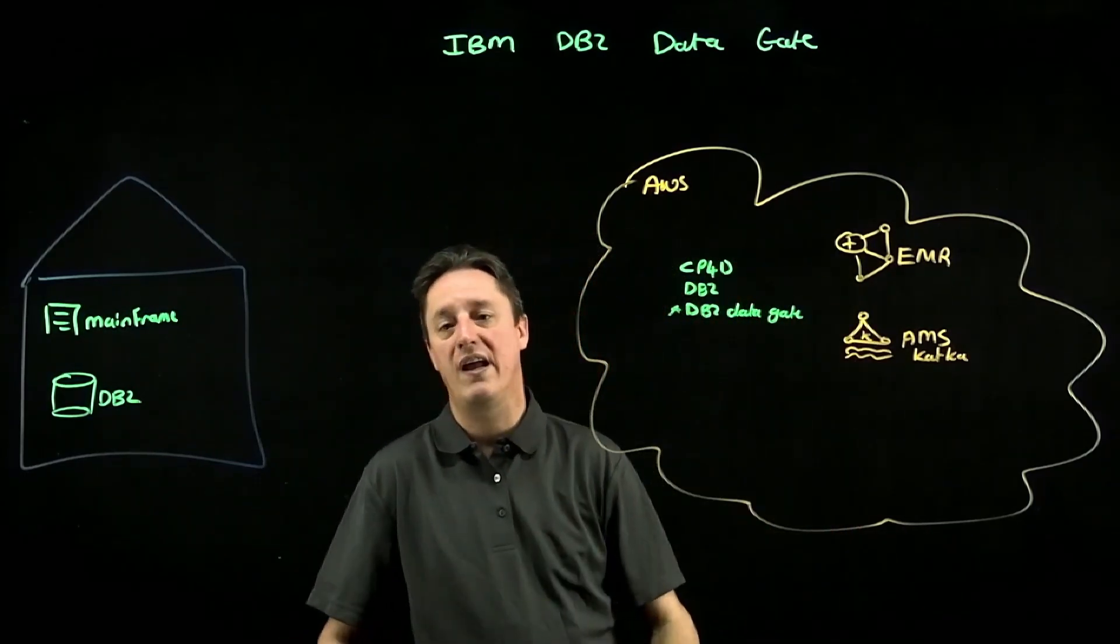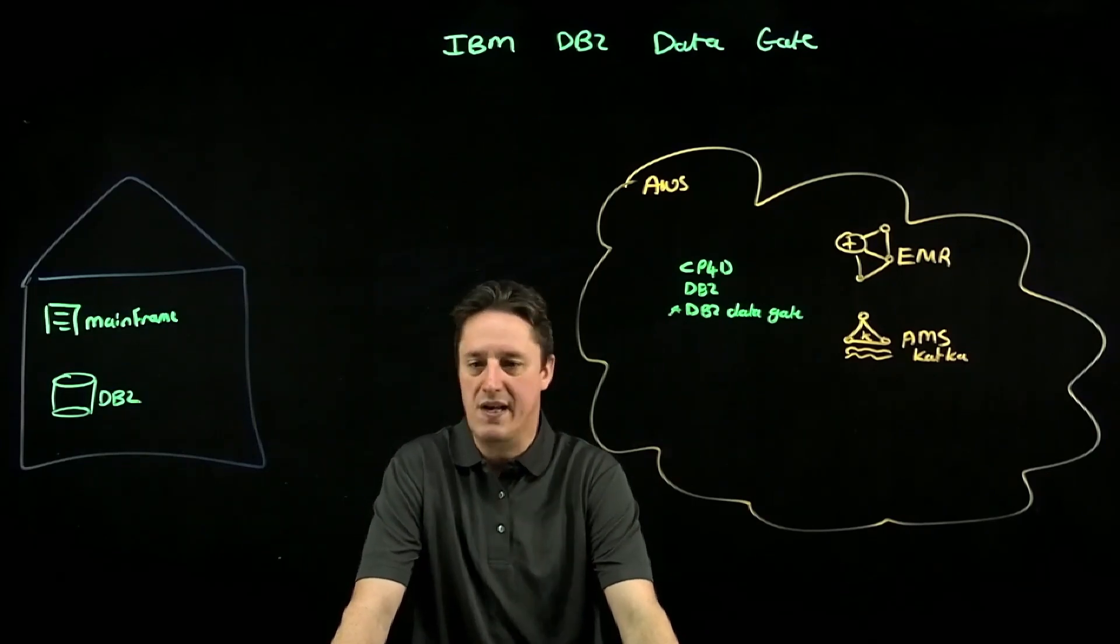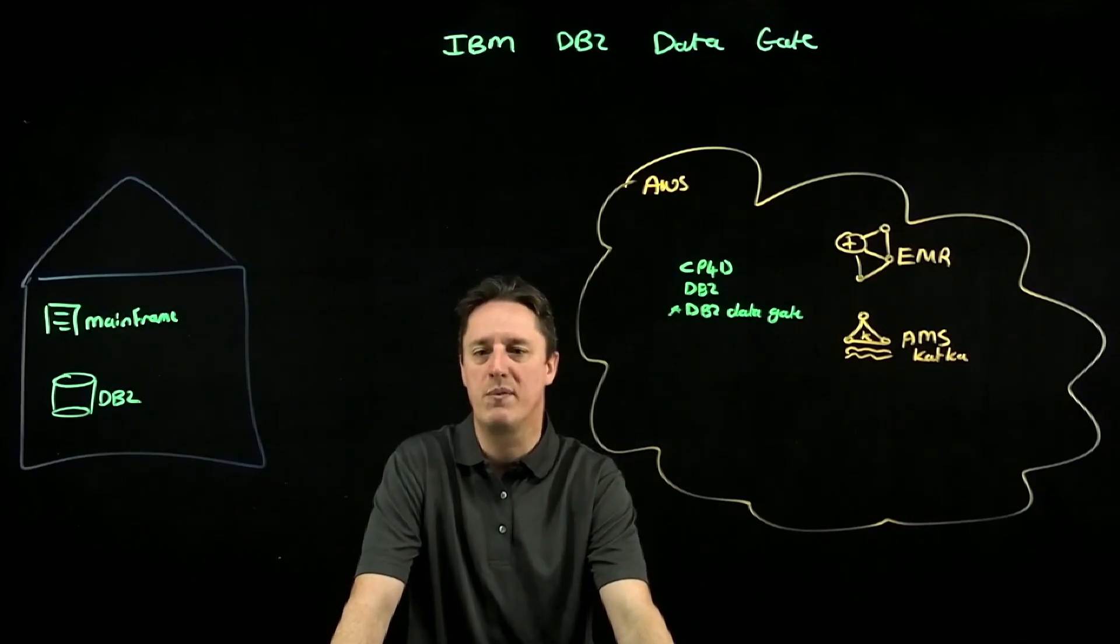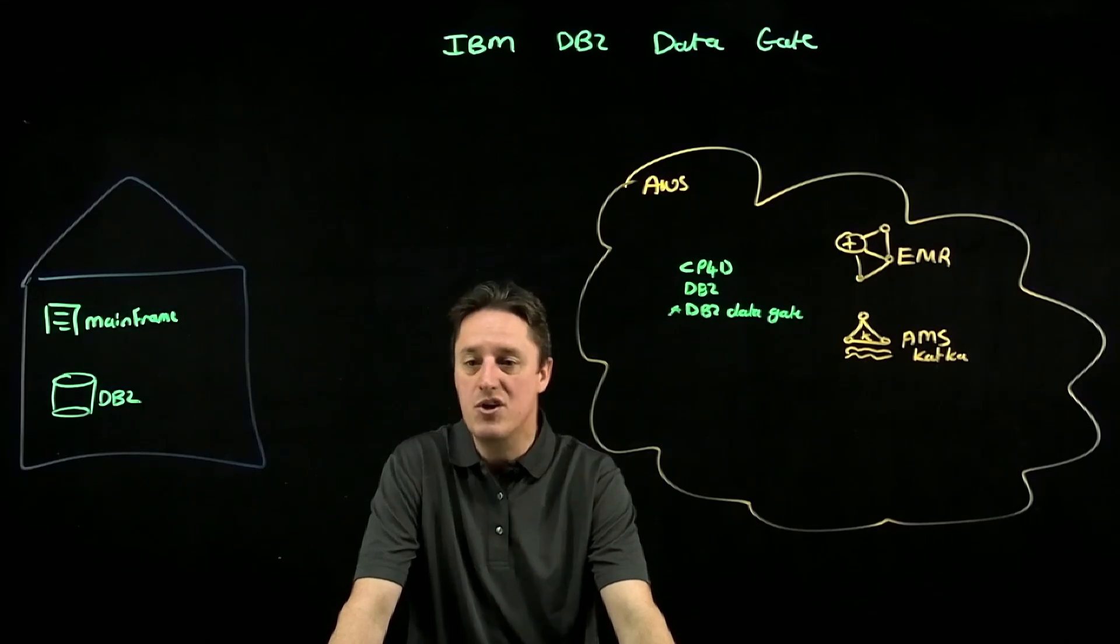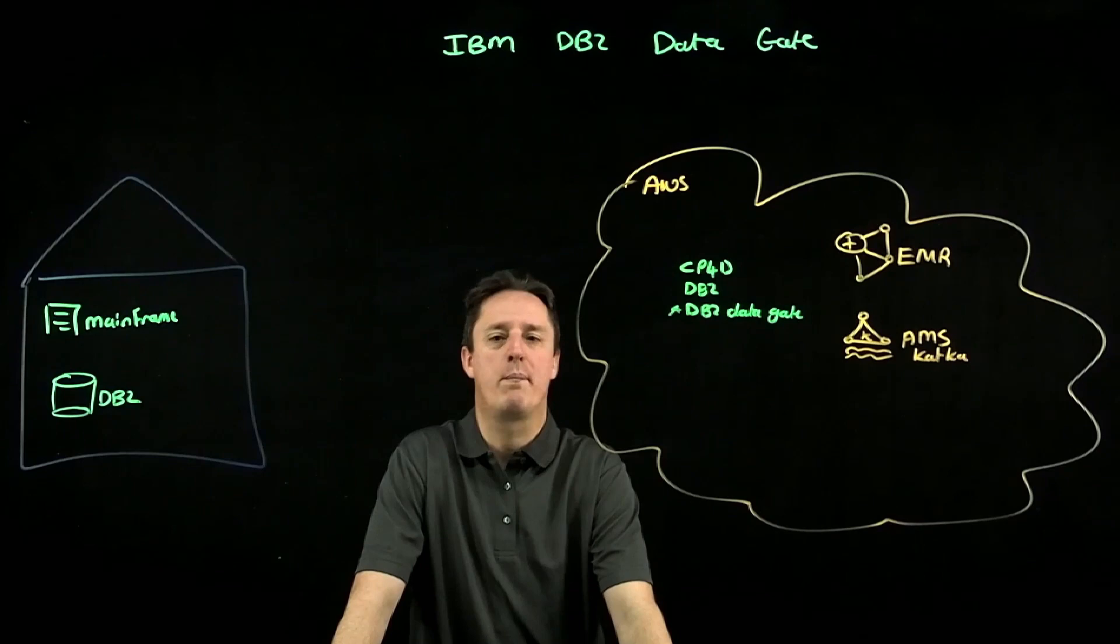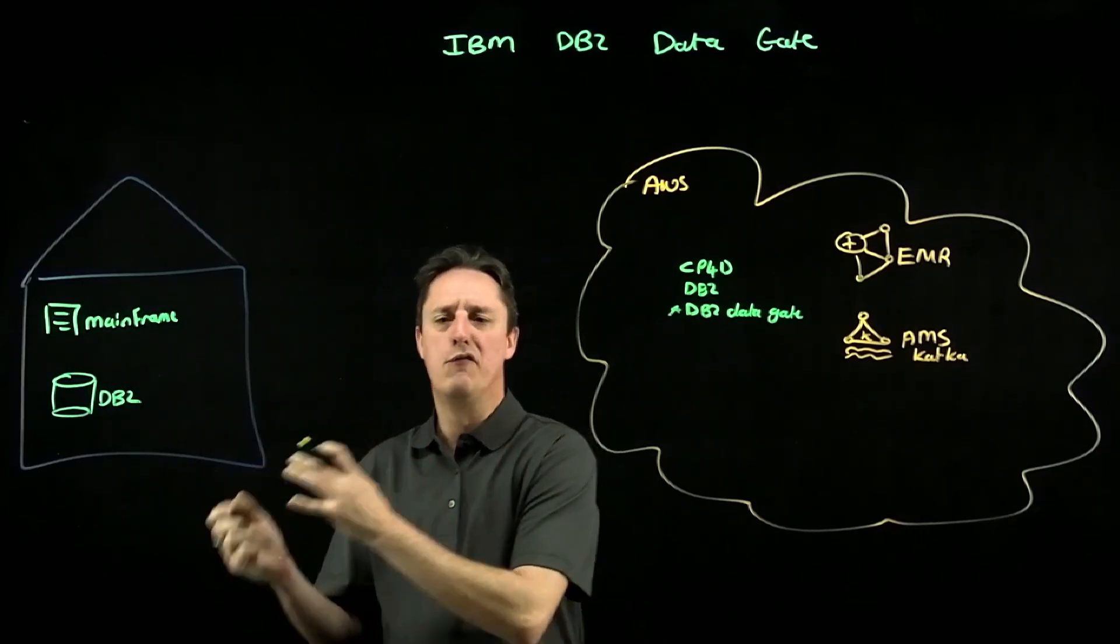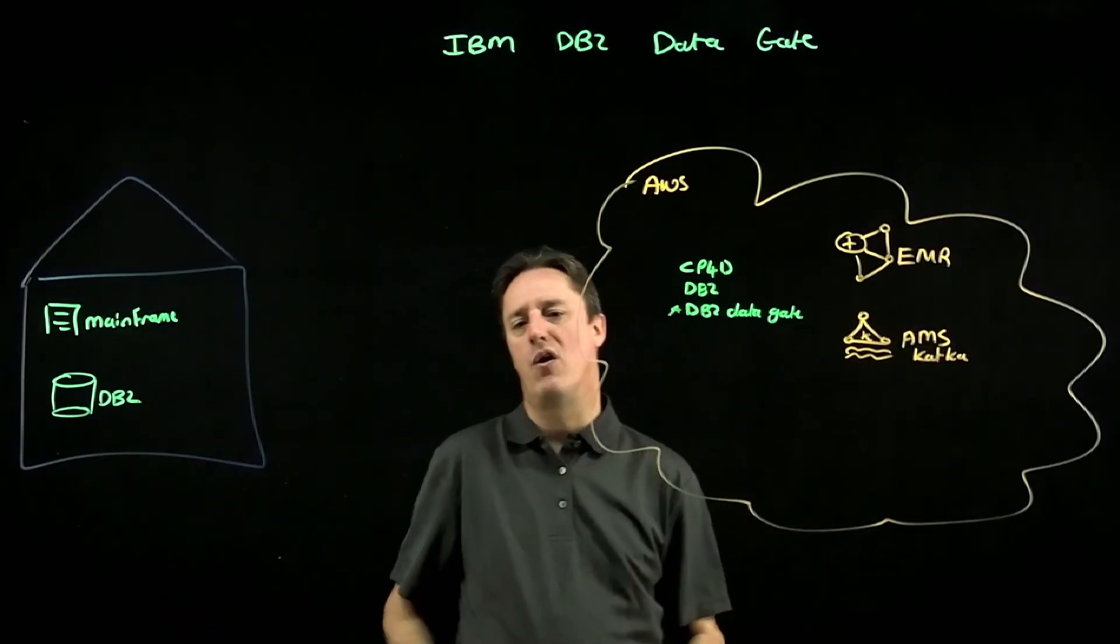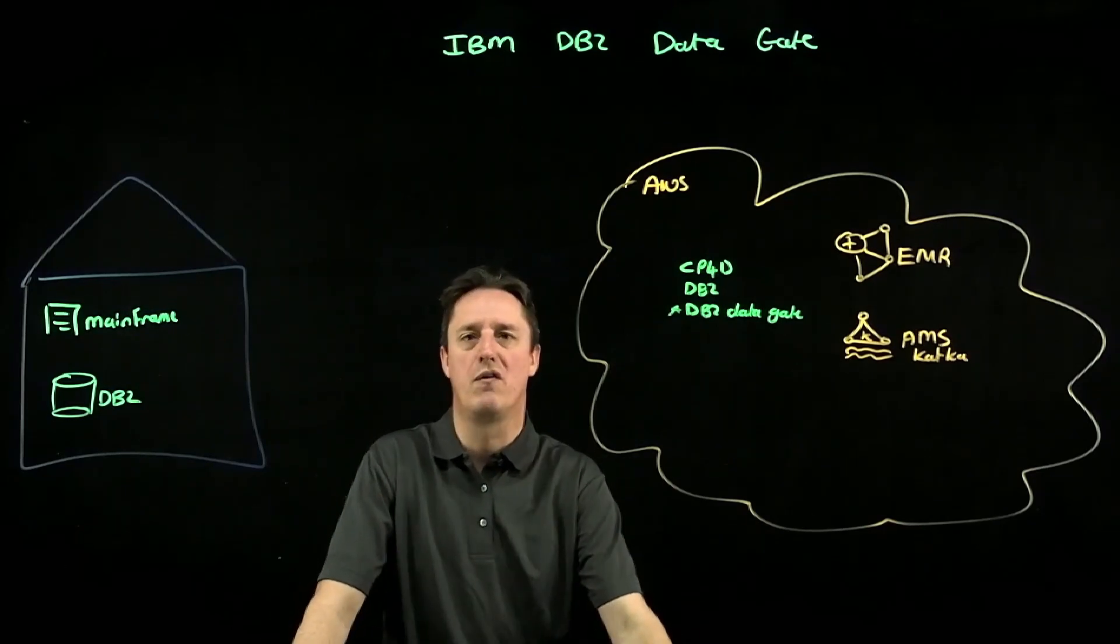Once it's over here, we can then use any number of AWS services, whether that is pushing it out to something like Elastic MapReduce or whether you're streaming it through some Kafka implementation, whether you're going to push that to AWS SageMaker. You've got a lot of functionality here. IBM DataGate really solves that problem for how do I take my data that is going to live on-premises. I don't want to move or relocate that data, but I want to take advantage of AWS services and really combine the best of both worlds.